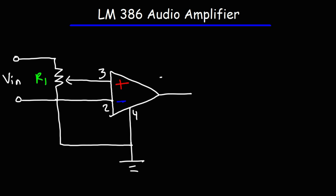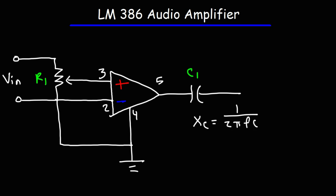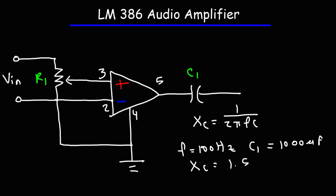Pin 5 is the output pin, and we're going to couple that to a coupling capacitor, which we'll call C1. The impedance of the coupling capacitor is represented by the equation 1 over 2πFC, where F is the frequency and C is the capacitance. At a frequency of 100 Hz and given a capacitance of 1000 µF, the impedance is going to be pretty low — 1.59 ohms — which is what you want, because you want the low and high frequencies to pass through this capacitor. As frequency increases, the capacitive reactance — the impedance to an AC signal — decreases. These two have an inverse relationship.